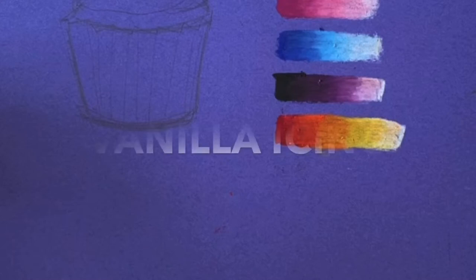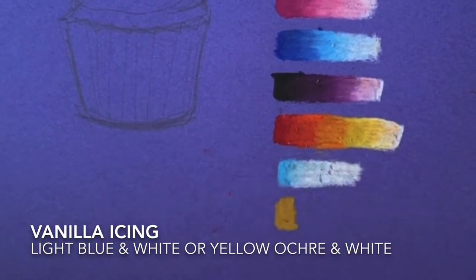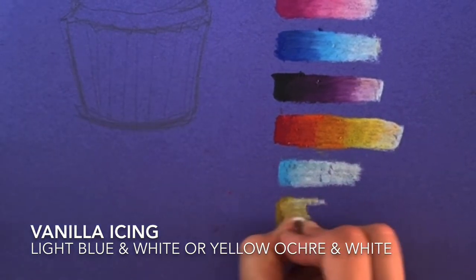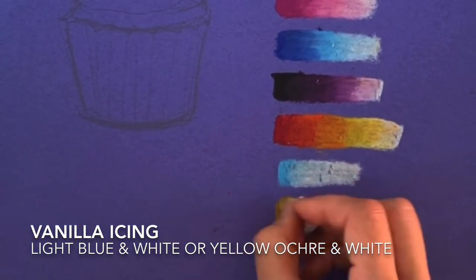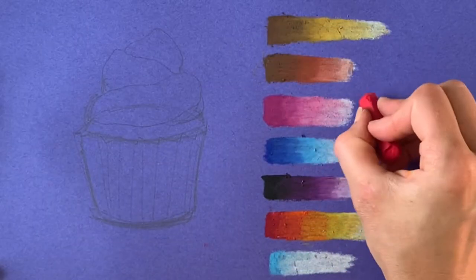I often have students ask me, 'Well what about vanilla because it's just white?' And remember, nothing's just one color. So your two best options for that is to start with a lighter blue and then use a dominant white, or you can start with that yellow ochre, that tan color, to create your more warm shadow. Either looks real enough.